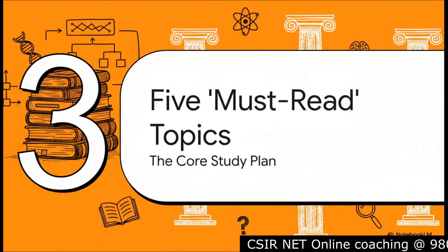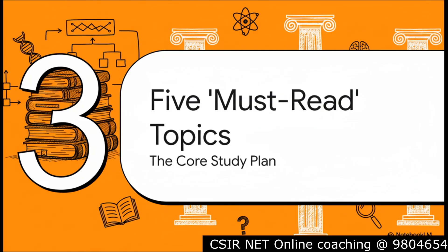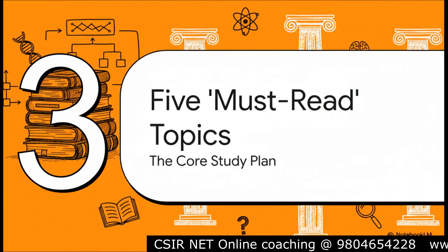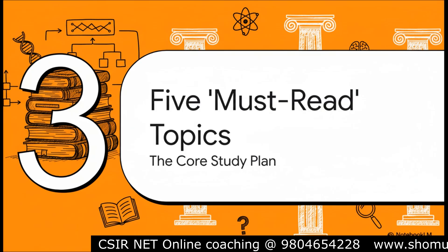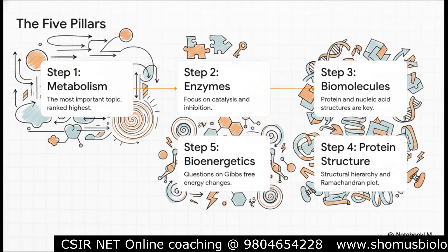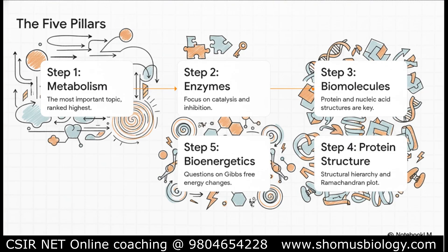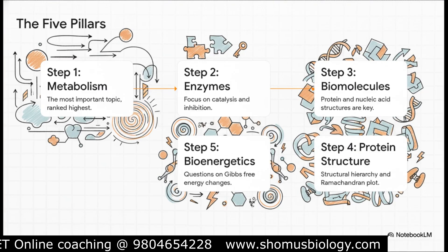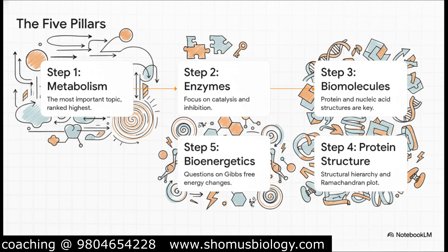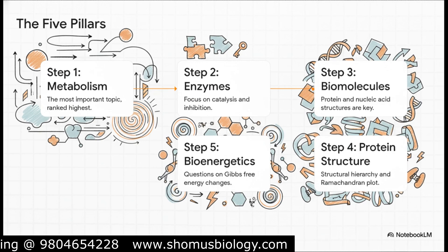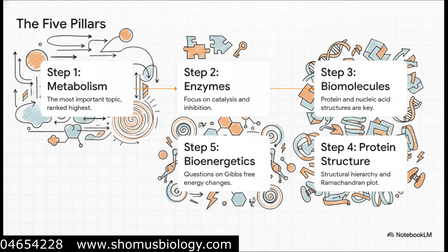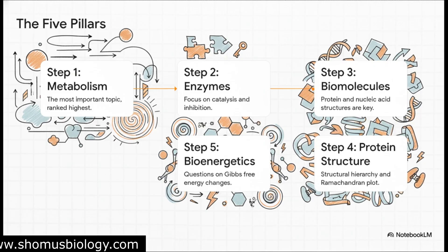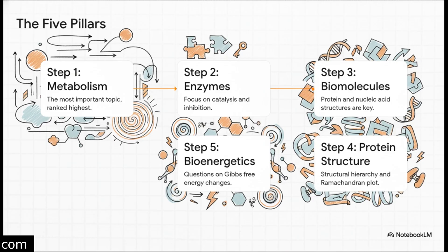We've looked at the syllabus and analyzed the exam pattern. Now let's boil all of that down to the absolute essentials. These are the five pillars that form the rock-solid core of your Unit 1 study plan — the Big Five, ranked by importance from a decade of data. Number one: metabolism — think of it as the cell's engine, and focus on how the pathways connect. Next, enzymes — the regulators of that engine; you've got to get comfortable with kinetics. Third, biomolecules and protein structure — the nuts and bolts of the whole operation. And finally, bioenergetics — the energy that powers it all. Mastering how these five areas connect is the real secret.